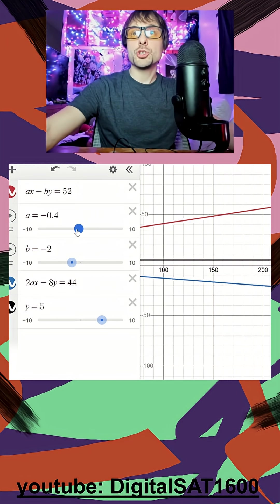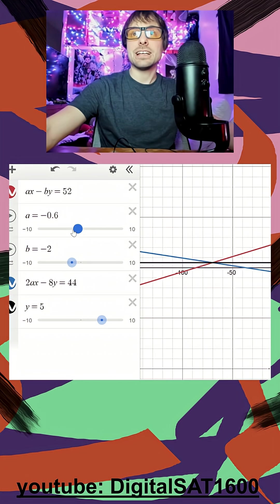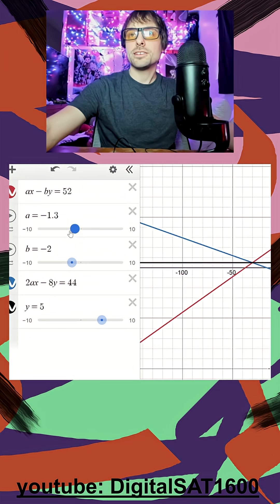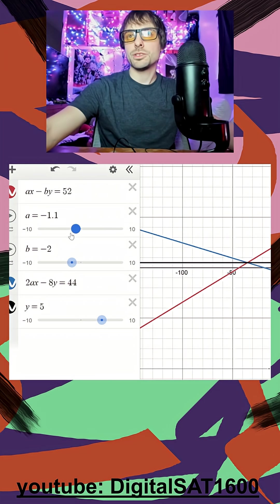When b is equal to negative 2, look how much my a is intersecting. It's always intersecting.